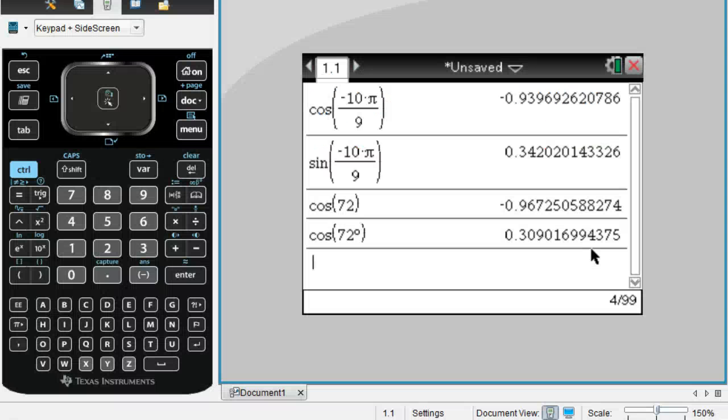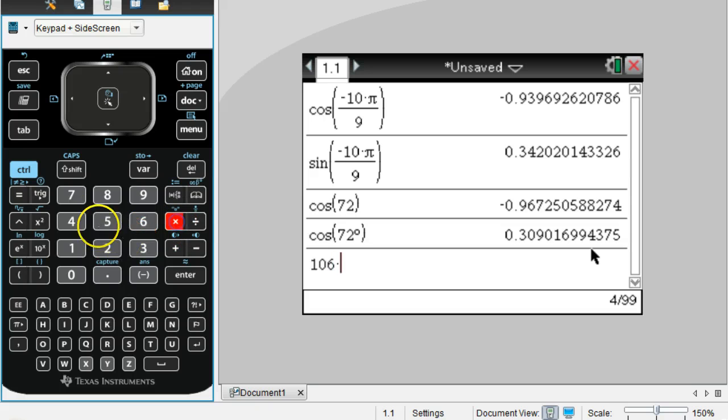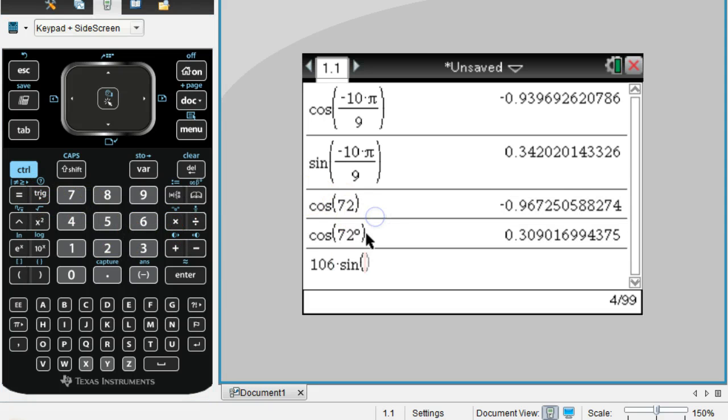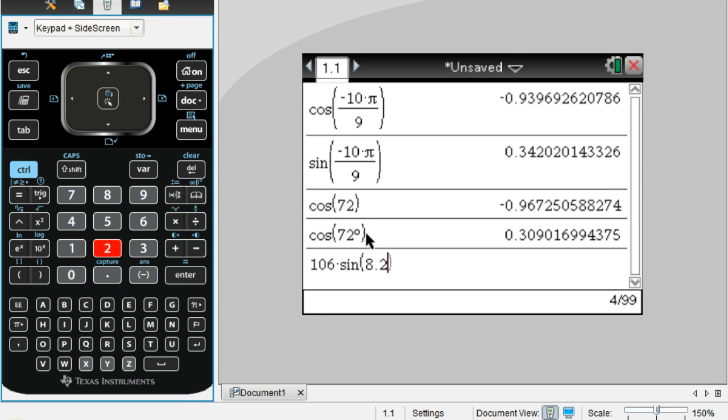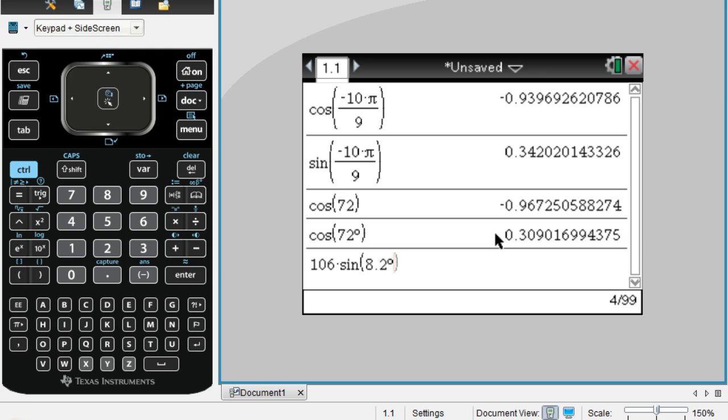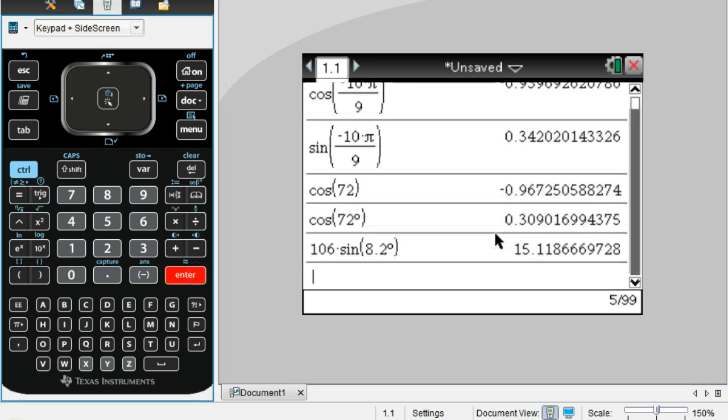So let's look at our calculator. So again, if I would type in 106 times the sine of 8.2, but remember, this is 8.2 degrees, so we have to do it this way. So I would take 106 times the sine of 8.2, hit enter, I get 15.11, or about 15 feet.